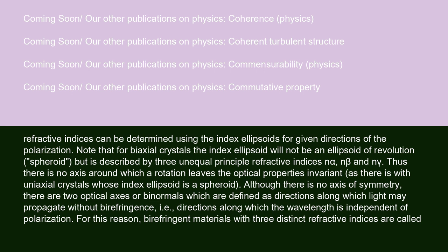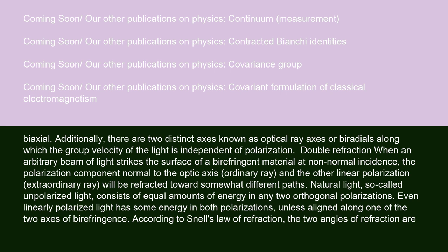For this reason, birefringent materials with three distinct refractive indices are called biaxial. Additionally, there are two distinct axes known as optical ray axes or biradials, along which the group velocity of the light is independent of polarization.